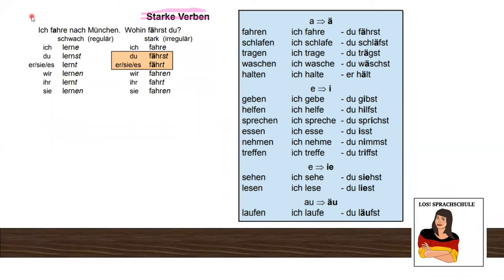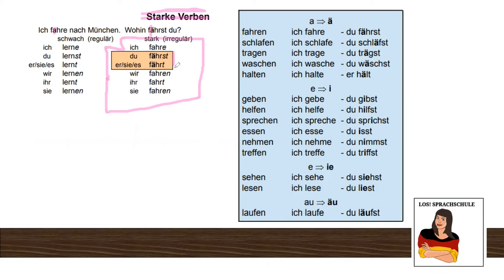Let's read the first sentence: 'Ich fahre nach München.' Fahren means to drive — but it can also mean you go by train or something, so: I'm going to Munich. Question: where are you going? 'Wohin fährst du?' So it's quite obvious: the a becomes ä. The good news is with a strong verb the only change is with 'you' and 'he/she/it': ich fahre, du fährst, er/sie/es fährt — then it's normal again: wir fahren, ihr fahrt, sie fahren.